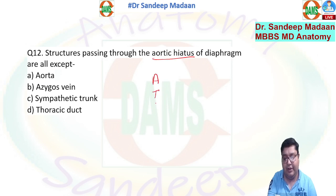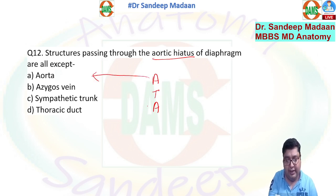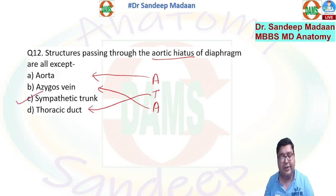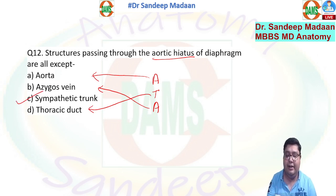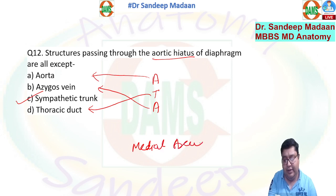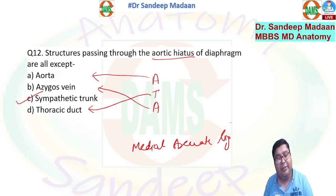Structures passing through the aortic hiatus — all except which? Use the mnemonic AATA: A for aorta, A for azygos vein, T for thoracic duct. The sympathetic trunk is the answer to the exception, because the sympathetic trunk passes behind the medial arcuate ligament, not through the aortic hiatus.